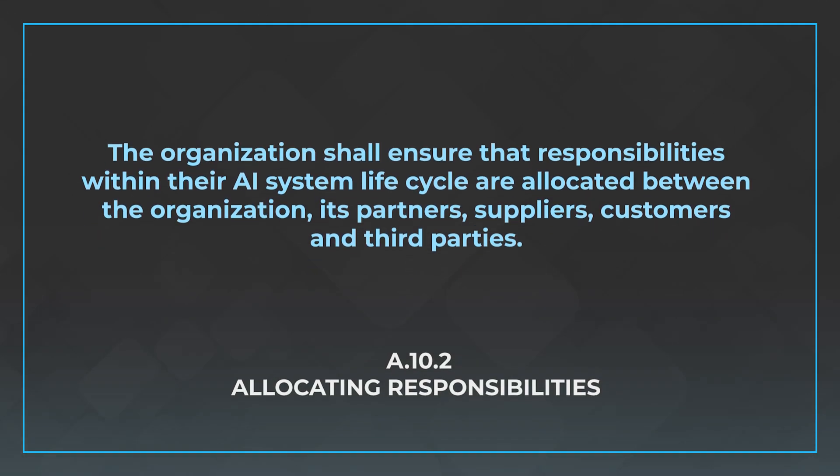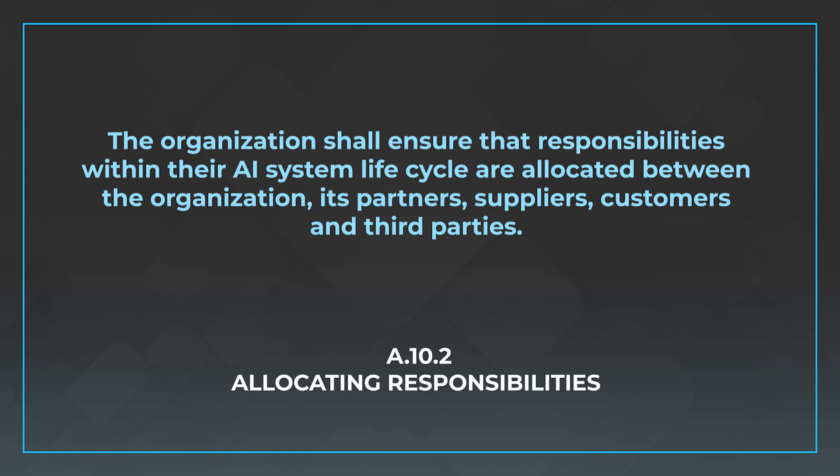The control says the organization shall ensure that responsibilities within their AI system lifecycle are allocated between the organization, its partners, suppliers, customers, and third parties. You want to think about what is within your control as the organization operating the management system, but also what things are outside of your control that still need to be called out as responsibilities. Write those things down — that's what this control is talking about.